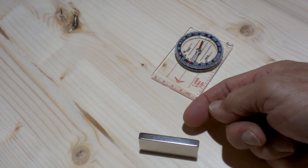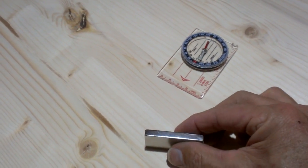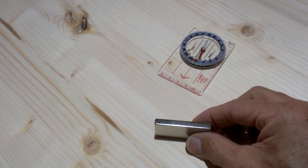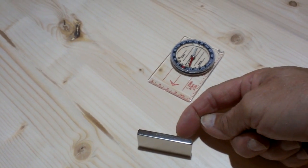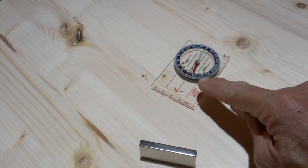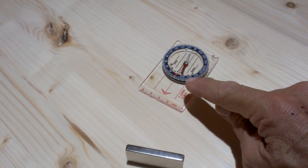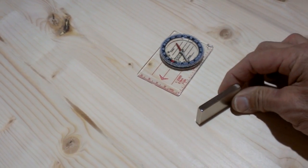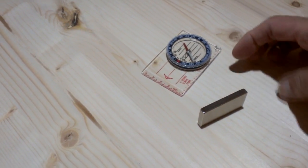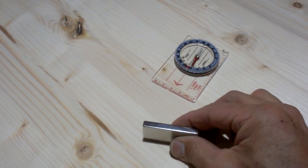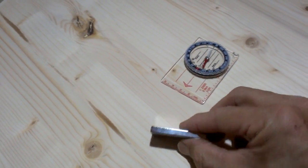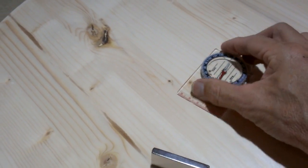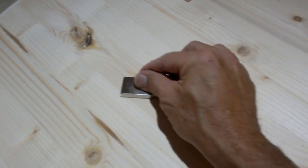I'm going to turn this over. Now we have the south pole of the magnet facing the north indicator of the compass. Again, since opposites attract, it spins around - south facing north, north facing south. Easy enough. Now I'm going to lay this down. We're going to do something different. We're going to use an electronic tool.